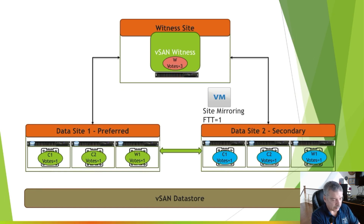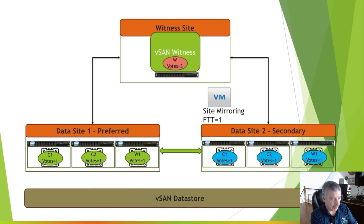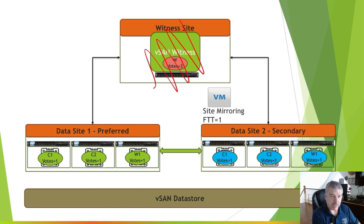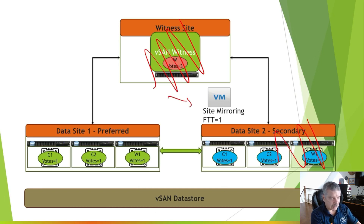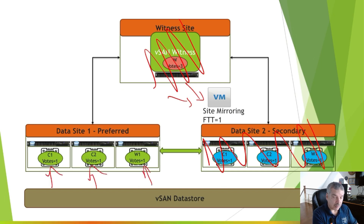For example, if this witness dies, everything would still continue to function — the VM doesn't get impacted. But if this whole site died, how many components do we have left? We have three components, three votes out of a total of nine. We're not allowed to power it on. So you see how this could come into play.